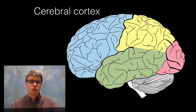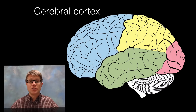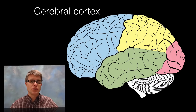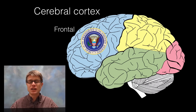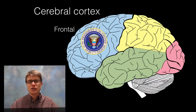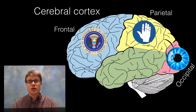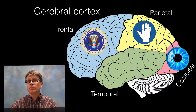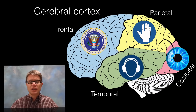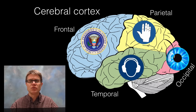Moving farther up we get to the cerebral cortex, which makes up about 80% of the brain. It's broken into four lobes. Starting in the front is the frontal lobe — its function is mostly executive function, like the boss of your brain, including emotional control. People with damage to the frontal lobe show huge emotional swings. Moving toward the back is the parietal lobe, which handles sensation and reacting to your environment, with lots of sensory input coming in. At the back is the occipital lobe, whose function is primarily vision. On the side are the temporal lobes, important in language, hearing, and memory.